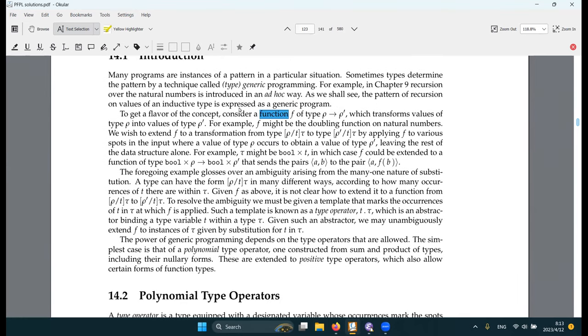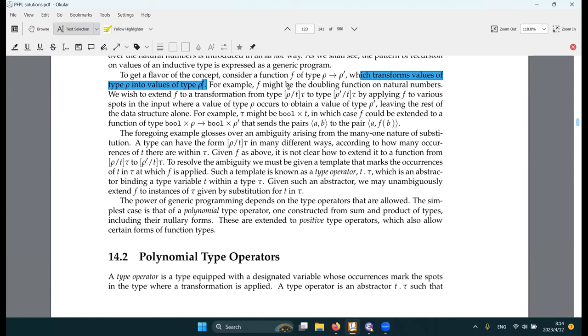Then the book starts to talk about, I think, a real example: a function f of type rho to rho prime where it changes the type rho to the value of rho prime. So far it's not that bad. But like f might be a doubling function of natural number. And then it gets weird because we wish to extend f to transform from this type to this. So we can apply f to various spots in the input where the value of type rho occurs and obtain a value of type rho prime. So this is like a map function.